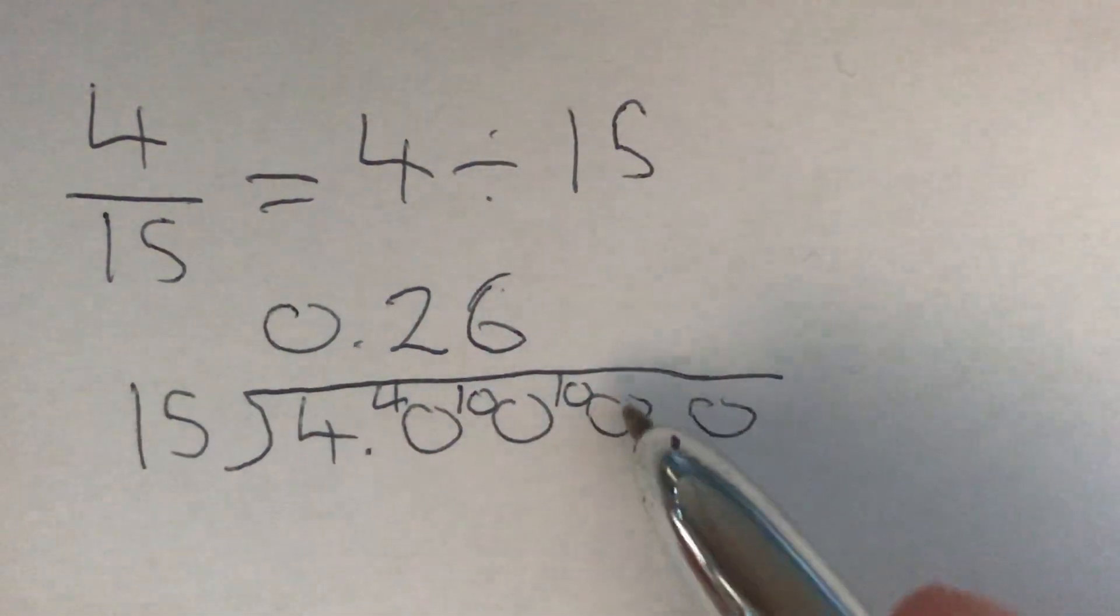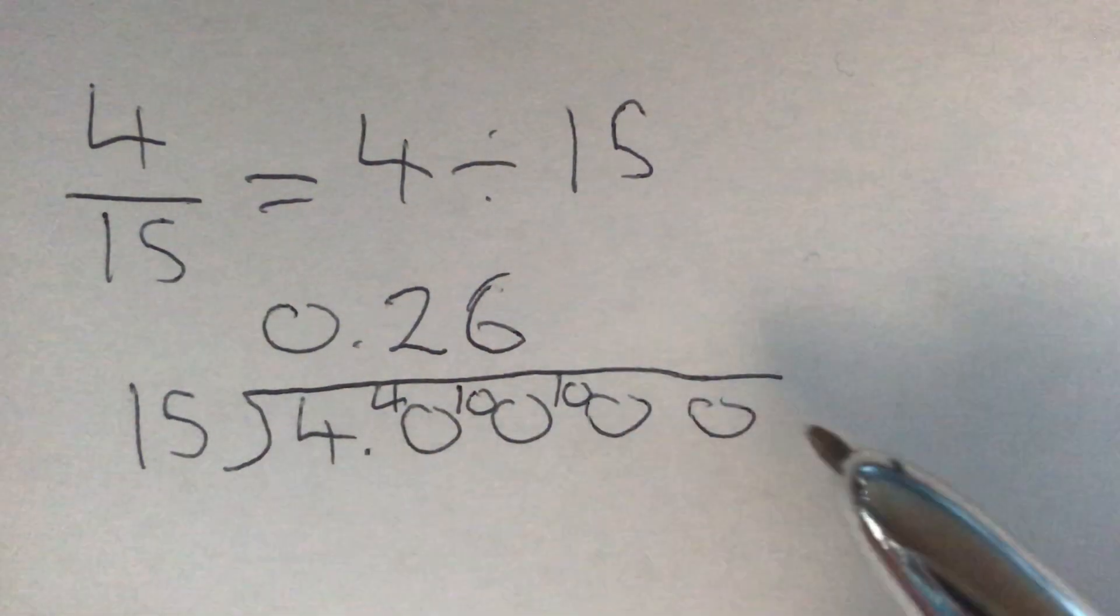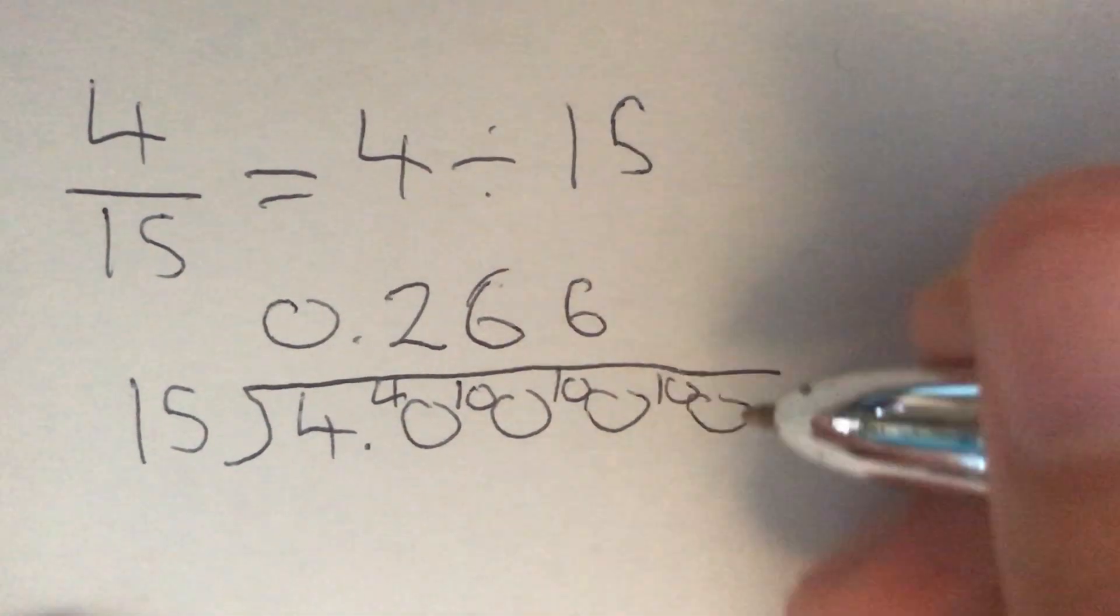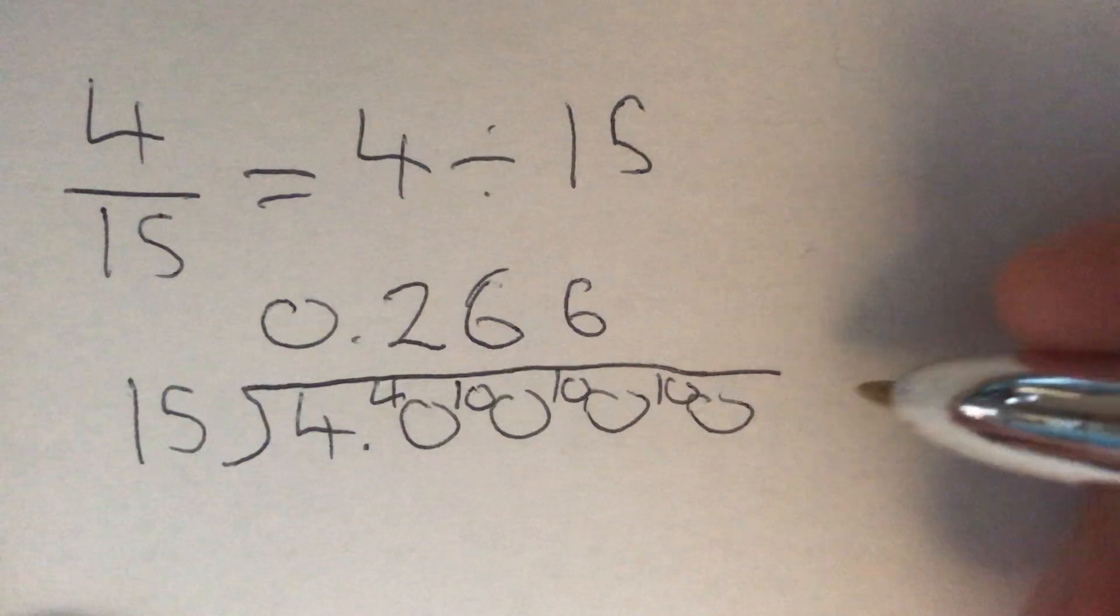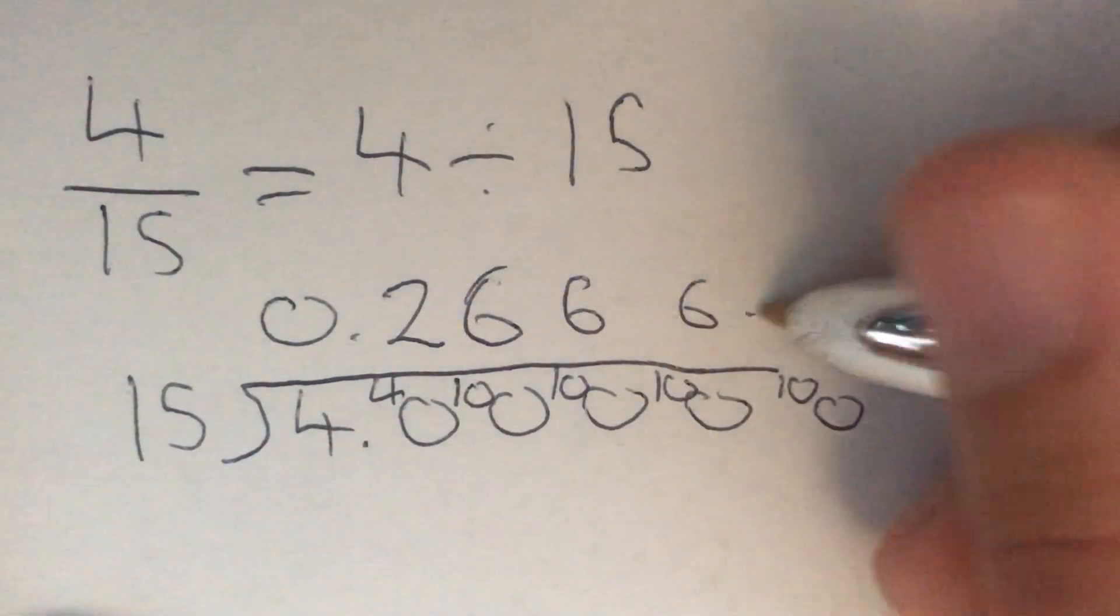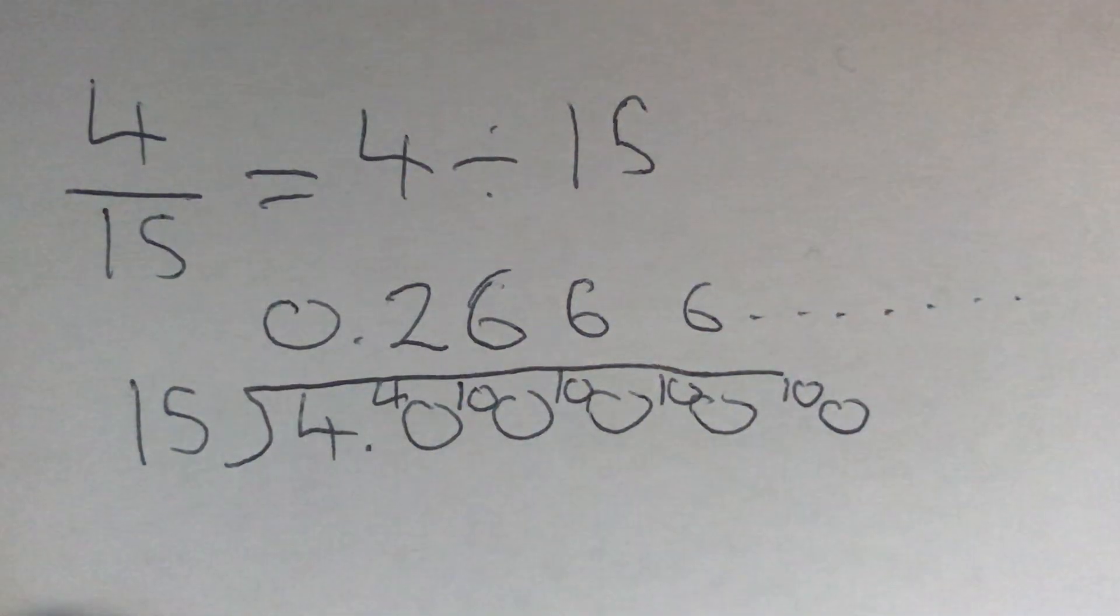And look again, we've now got to find how many 15s go into 100 again. Well, we've just done that. It was 6 with 10 left over. And now we've got 100 again. It's going to be 6 with 10 left over. And this pattern is going to continue on forever.